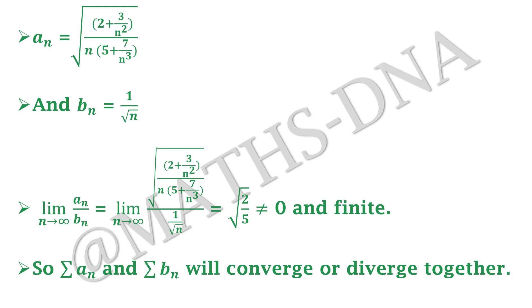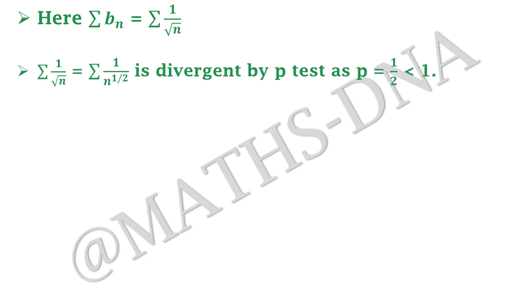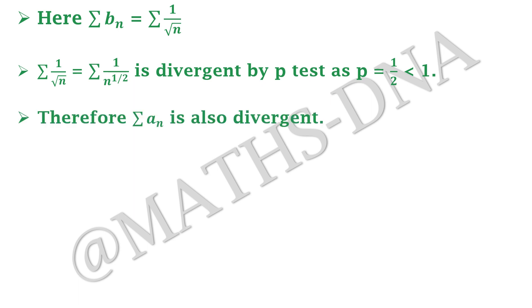From here we can see that summation aₙ and summation bₙ converge or diverge together. Our summation bₙ = Σ 1/√n = Σ 1/n^(1/2), which is divergent by the p-test because p = 1/2 < 1. Therefore our aₙ series is also divergent, and hence option (a) is not correct.